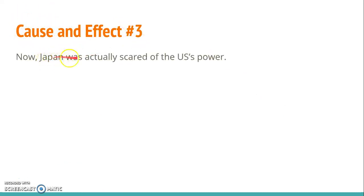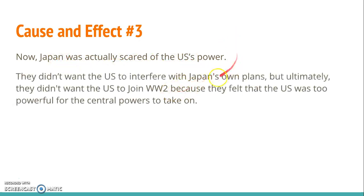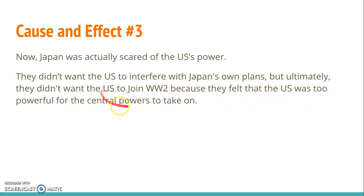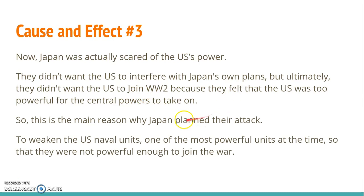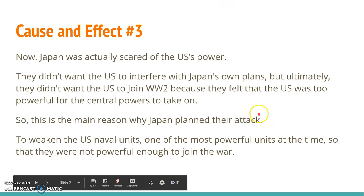The main cause was that Japan was actually scared of U.S. power. They didn't want the U.S. to interfere with their own plans, such as the war against China, but ultimately the real reason was that they didn't want the U.S. to join World War II, because they felt the U.S. was too powerful for the central powers to take on. To weaken the U.S. Navy, which was one of the most powerful at the time, they wanted to weaken them so the U.S. wasn't powerful enough to join the war.